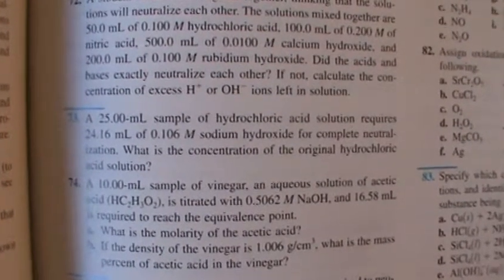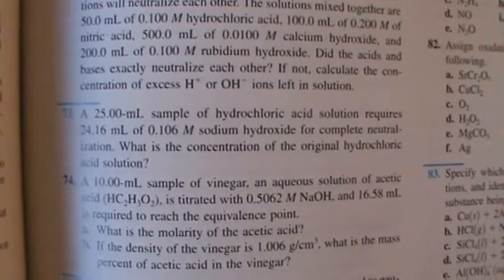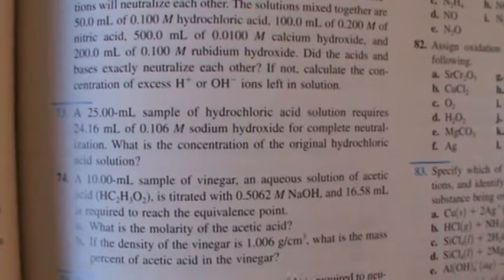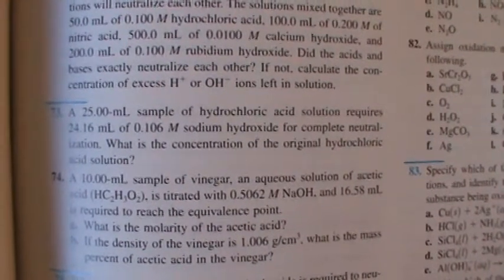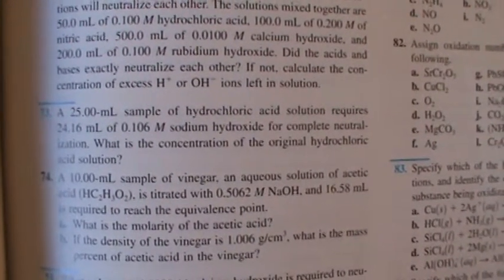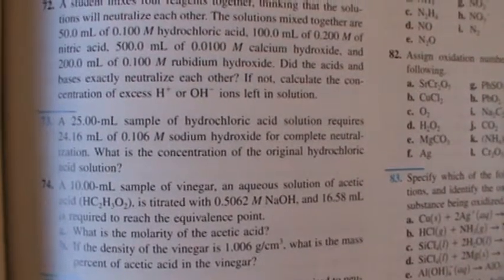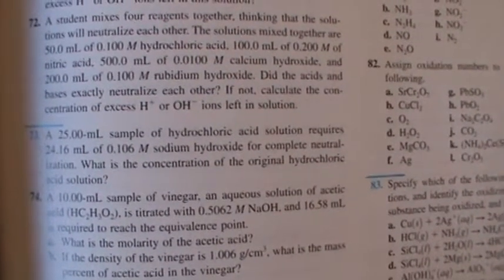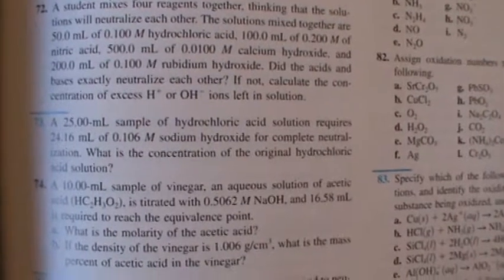It says a 25 milliliter sample of hydrochloric acid solution requires 24.16 milliliters of 0.106 molar sodium hydroxide for complete neutralization. What is the concentration of the original hydrochloric acid solution?